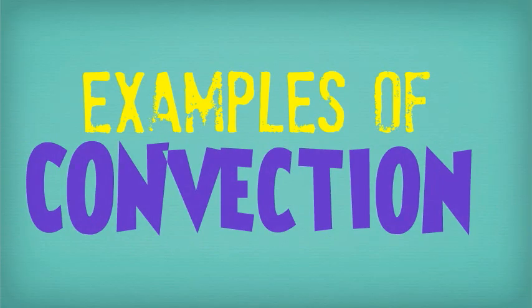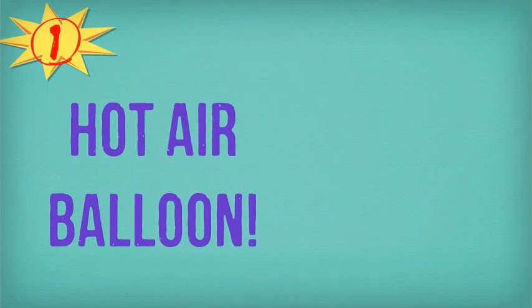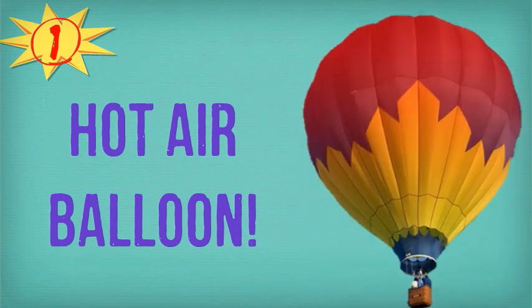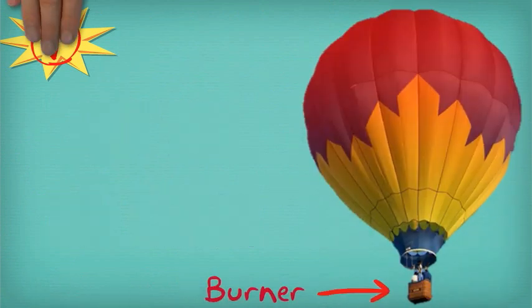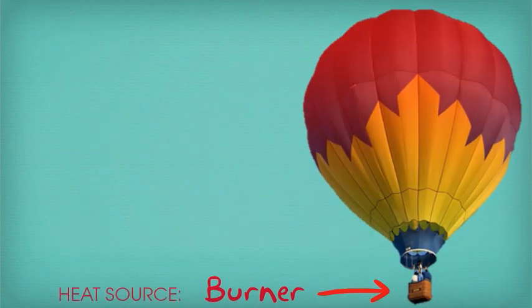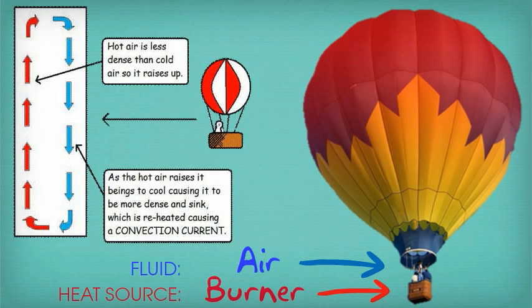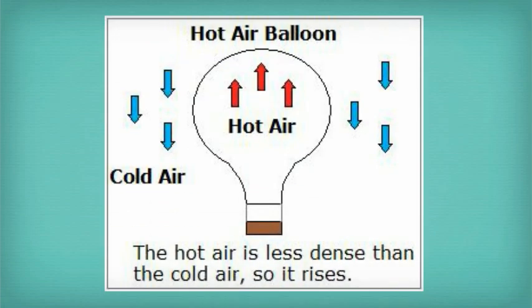Examples of heat convection. A hot air balloon: a burner at the base of the balloon warms the air inside. As the air warms up, it moves upwards, cools, and moves round in a circular pattern known as a convection current. When the balloon is full of hot air, it lifts off the ground because the hot air inside is less dense and lighter than the cold air outside it.